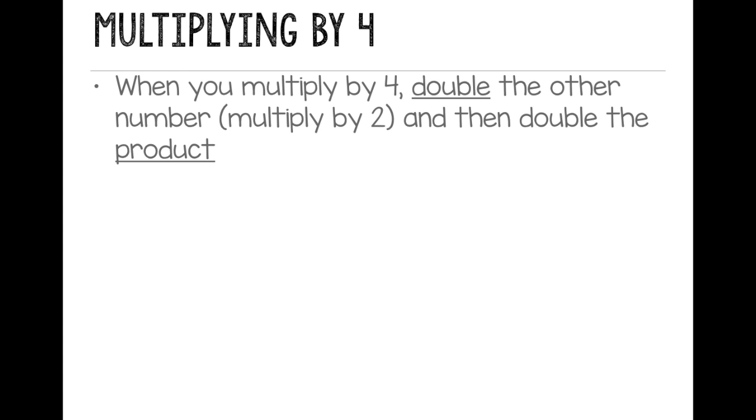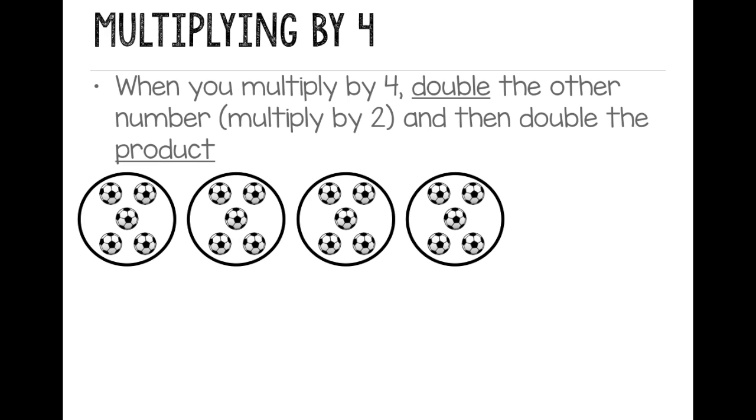When I'm multiplying by 4, I double the other number, so I multiply by 2, and then I'm going to double the product. So if I have 4 groups of 5 soccer balls, first I double the other number. So I look at just 2 of them. I'm going to double that. 2 times 5. That's the same as 5 plus 5, and that equals 10.